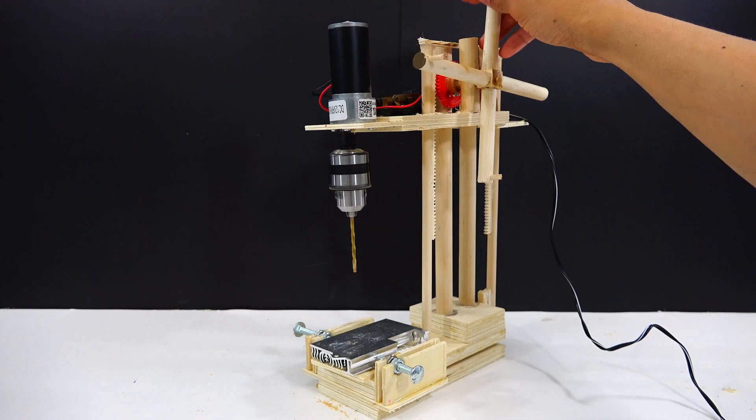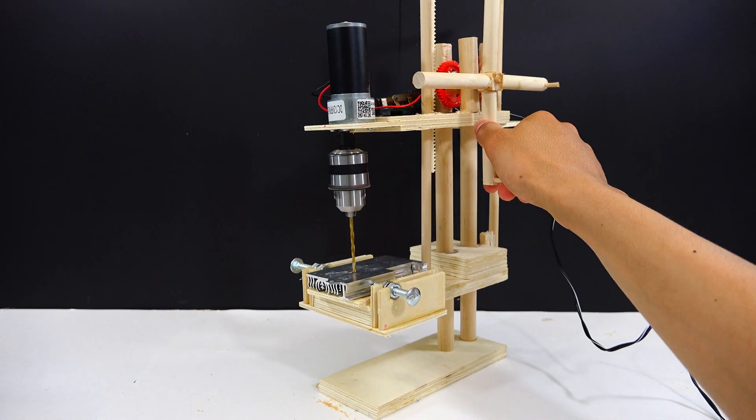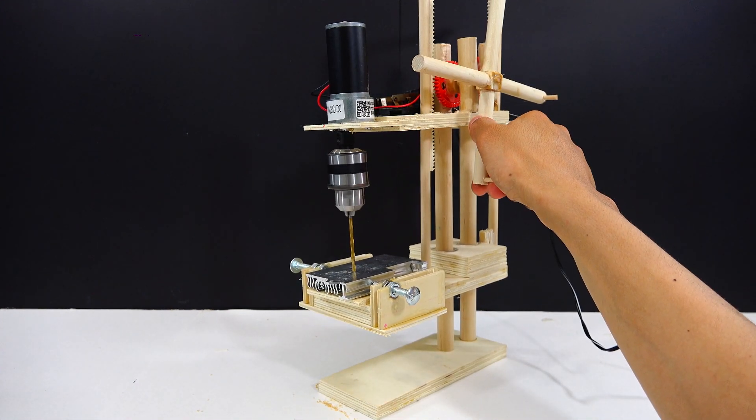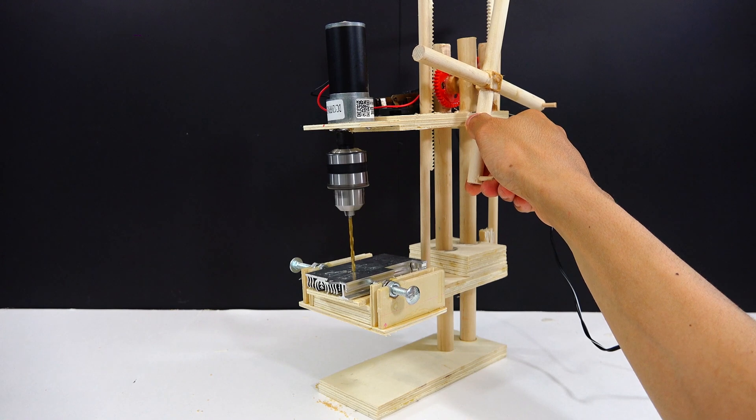We can also drill holes in metal. This here is just an aluminum heat sink. And it'll take a bit of time but we will drill through this as well.